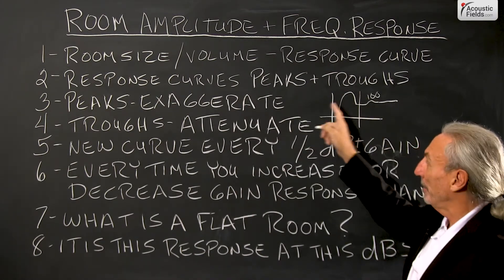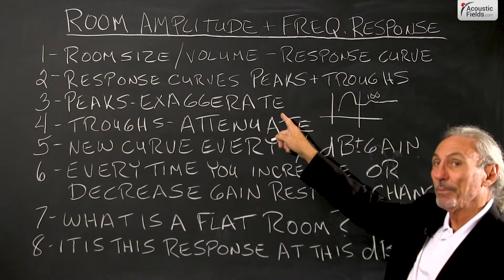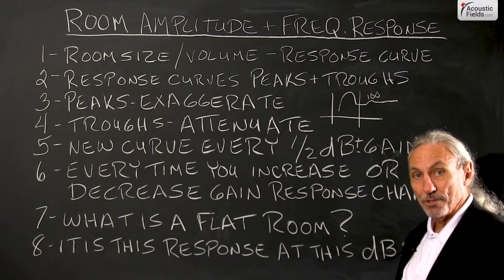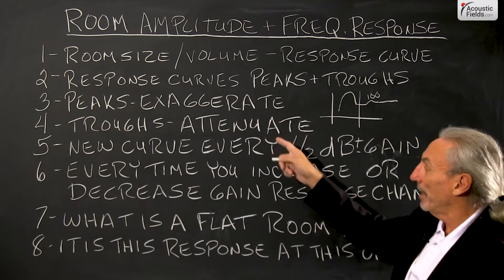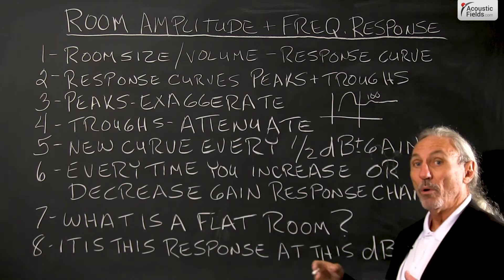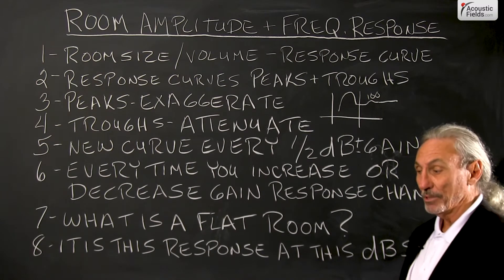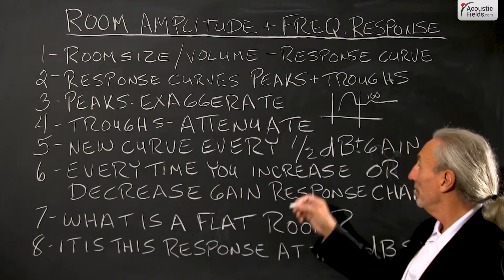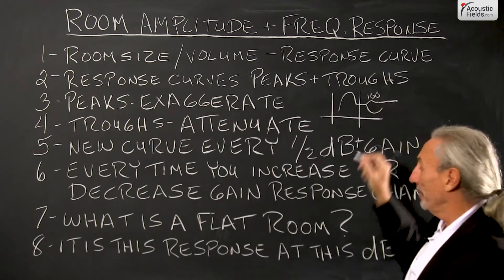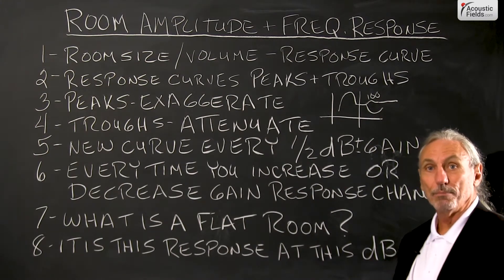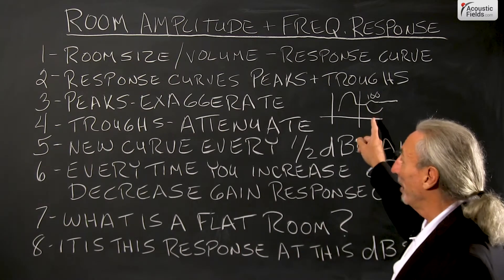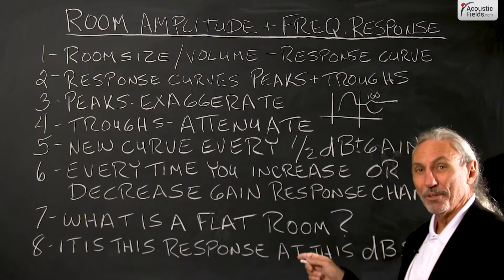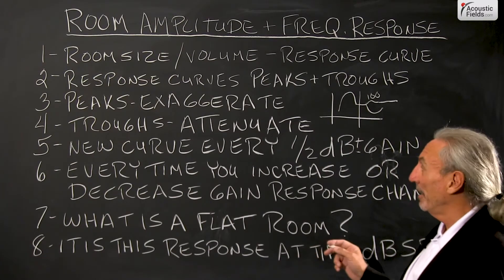We know that we have peaks and troughs. Our peaks can exaggerate certain frequencies and sounds, and the troughs can attenuate or completely eliminate them. You can try to EQ a trough in a frequency response curve and blow up your equalizer because the room is simply not going to let you work with it in that way. I know that's hard to understand, but that's really how it is.